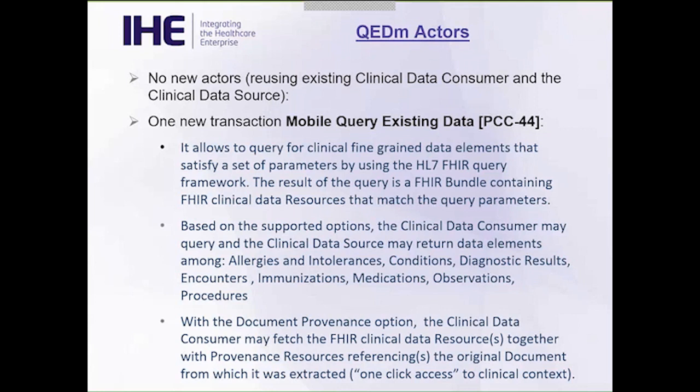There are several options available based on the type of data you're querying, as listed in the profile. There is one additional option available: the document provenance option, which allows the clinical data consumer to fetch the FHIR clinical data resources together with the provenance resource, referencing the original document from which the clinical data was extracted.